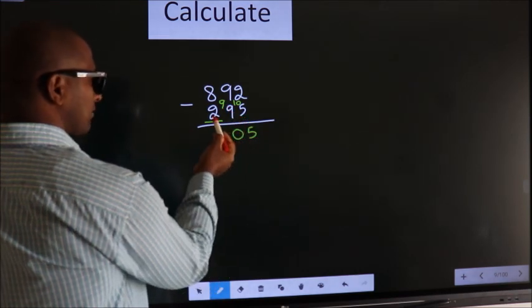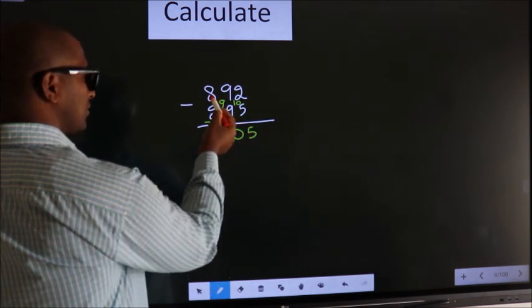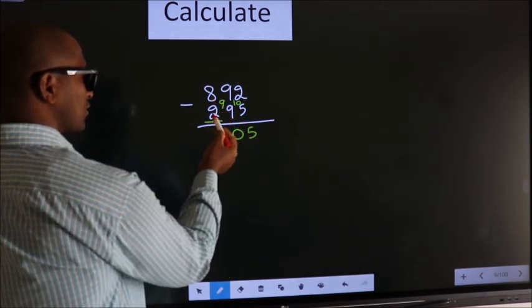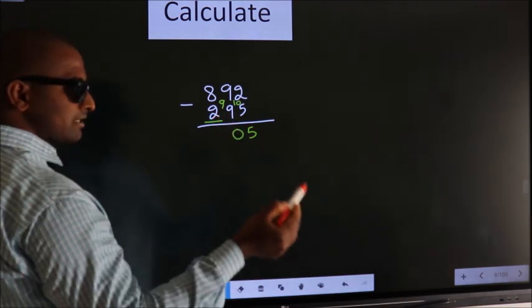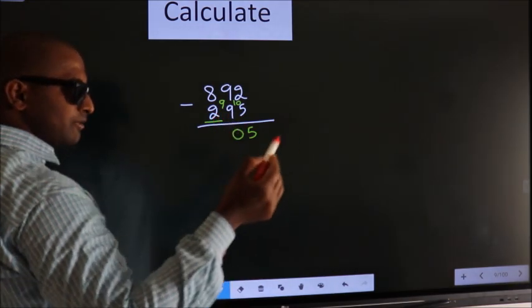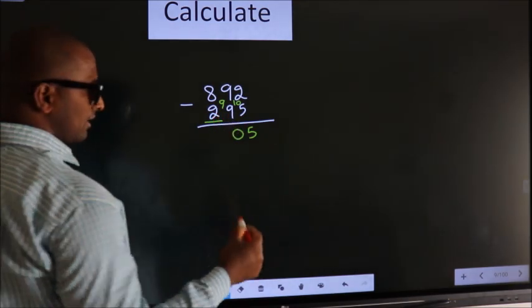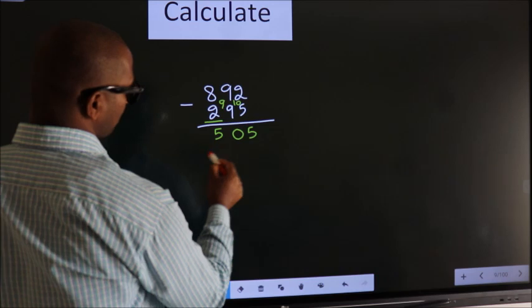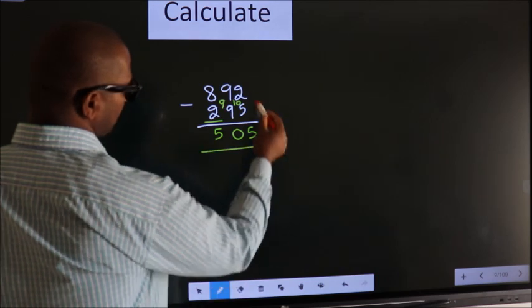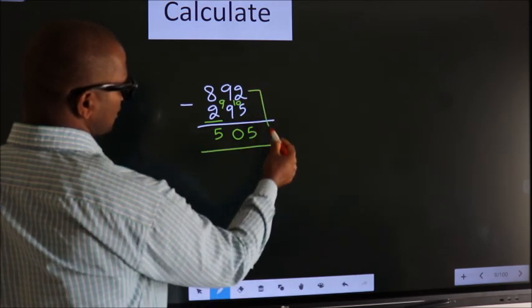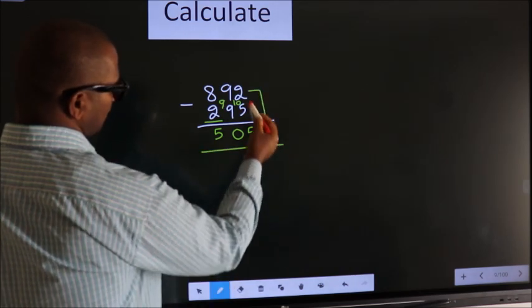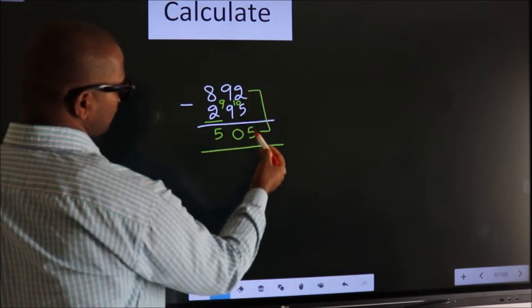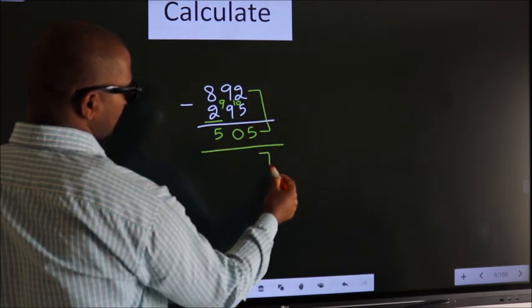For the first digit you do 8 minus 2, we get 6. Decrease more by 1, we get 5. Now add these two: 2 plus 5 equals 7.